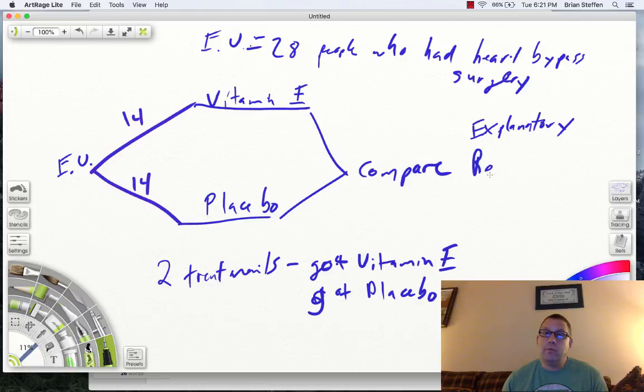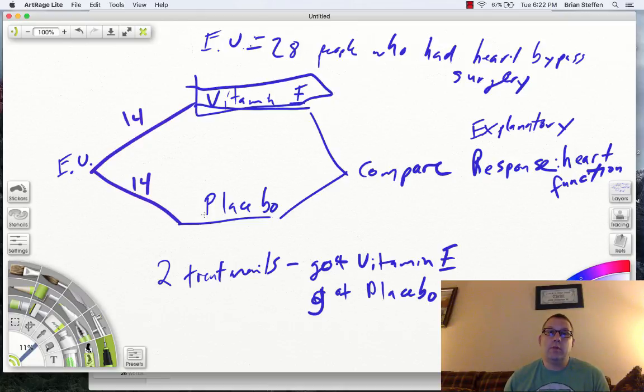The response variable, what am I measuring a response to? I am checking to see heart function. My response variable is heart function, okay? And heart function, it doesn't really specify what that is, but it just says heart function. So explanatory is whether they got the vitamin E up here, or they got the placebo. And then I'm going to check to see what effect does that have on heart function?